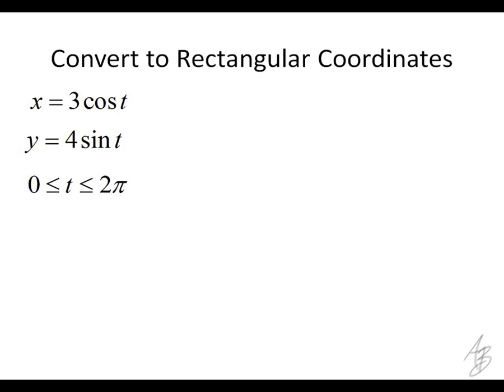So let's try to eliminate variables here the same way we did before. If I do that, I want to get cosine squared of t here by itself. And so I get cosine squared of t is equal to what? x squared over 9.